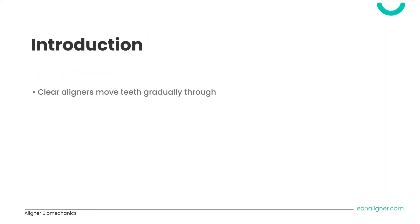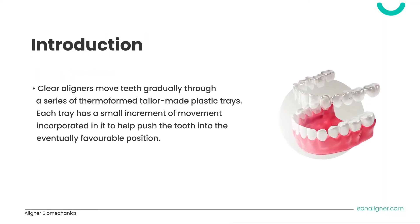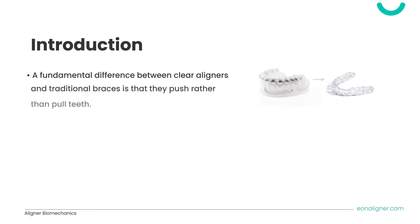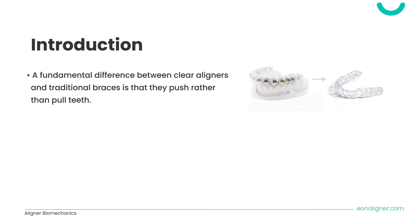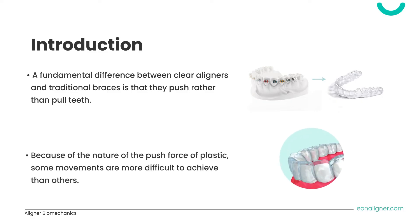Clear aligners move teeth gradually through a series of thermoformed, tailor-made plastic trays. Each tray has a small increment of movement incorporated to help push the tooth into the eventually favorable position. A fundamental difference between clear aligners and traditional braces is that they push rather than pull teeth. Because of the nature of this push force, some movements are more difficult to achieve than others.